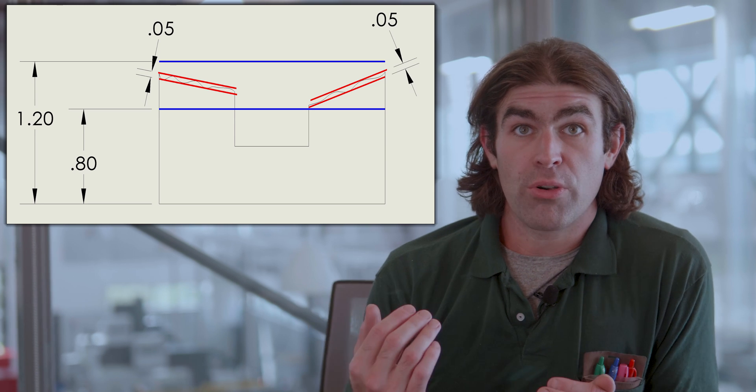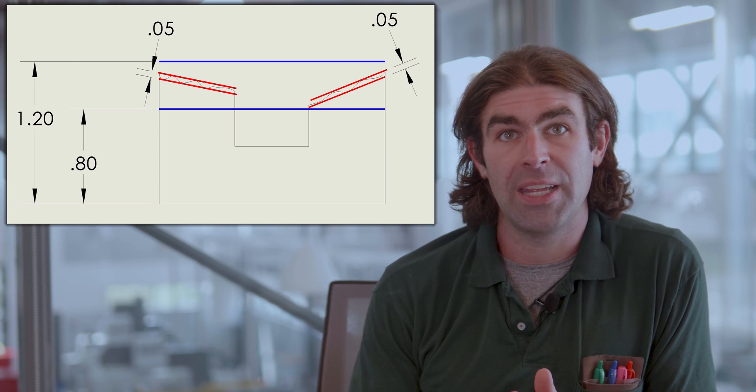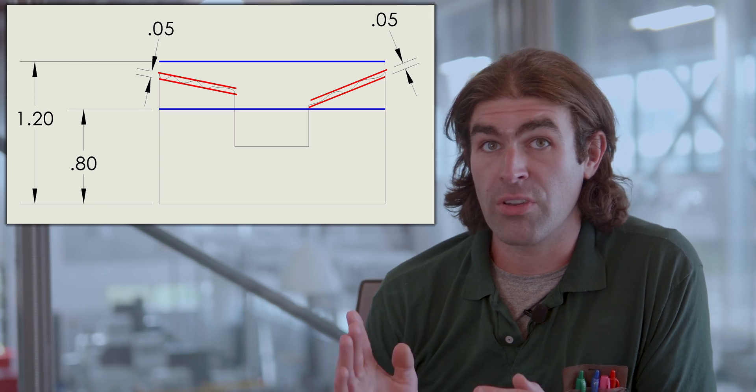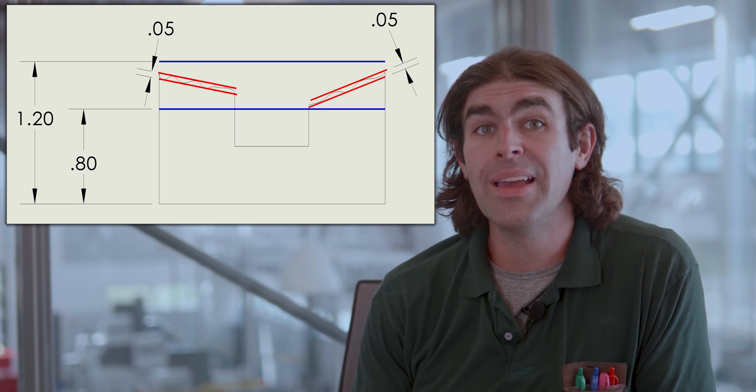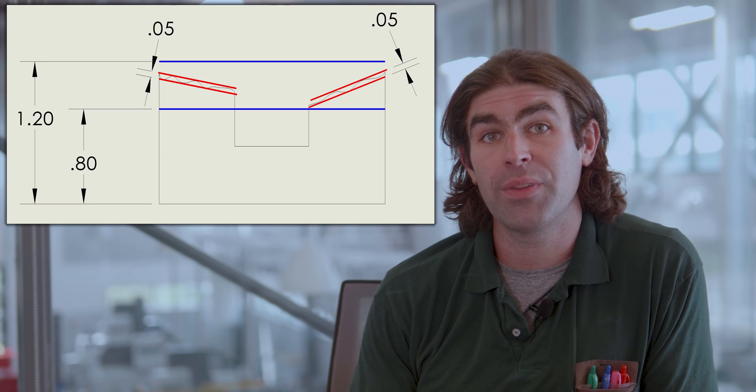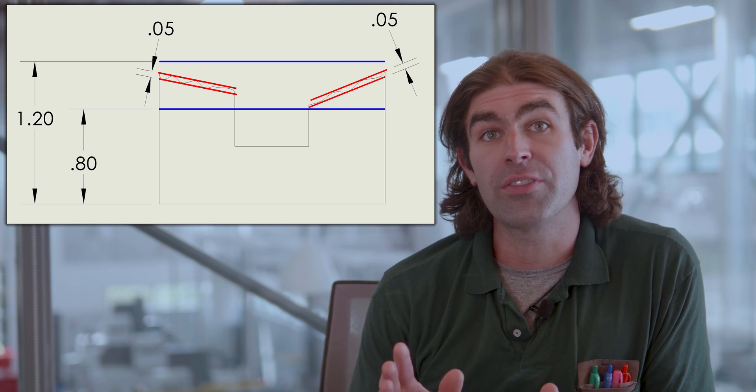Now both surfaces can still move independently of each other. One of them can be angled one way, one of them can be angled the other. They could be all over the place. There's no relation between those two surfaces because flatness only works on individual features, even with that two-time symbol or if you have a note that says two surfaces they're still independent of each other.